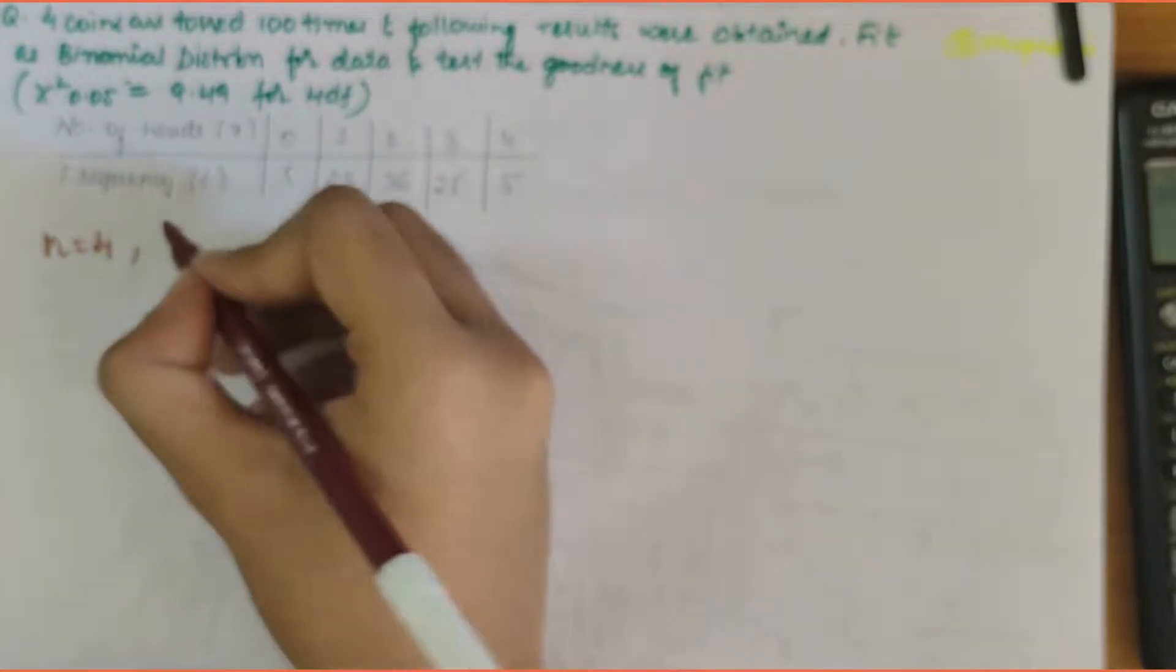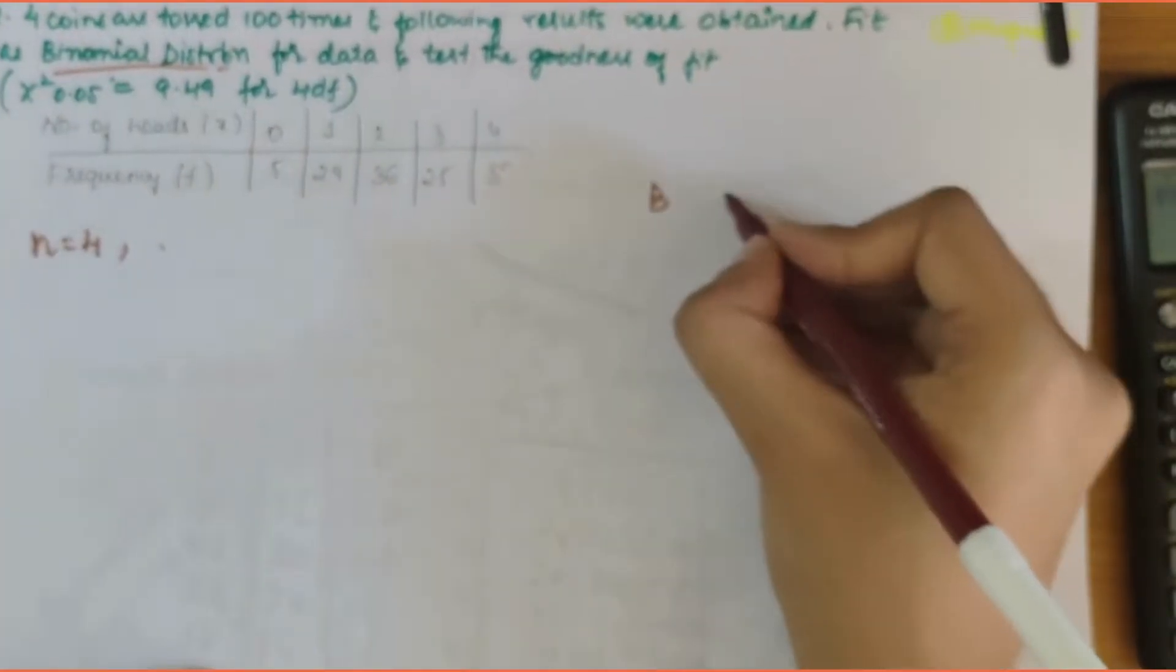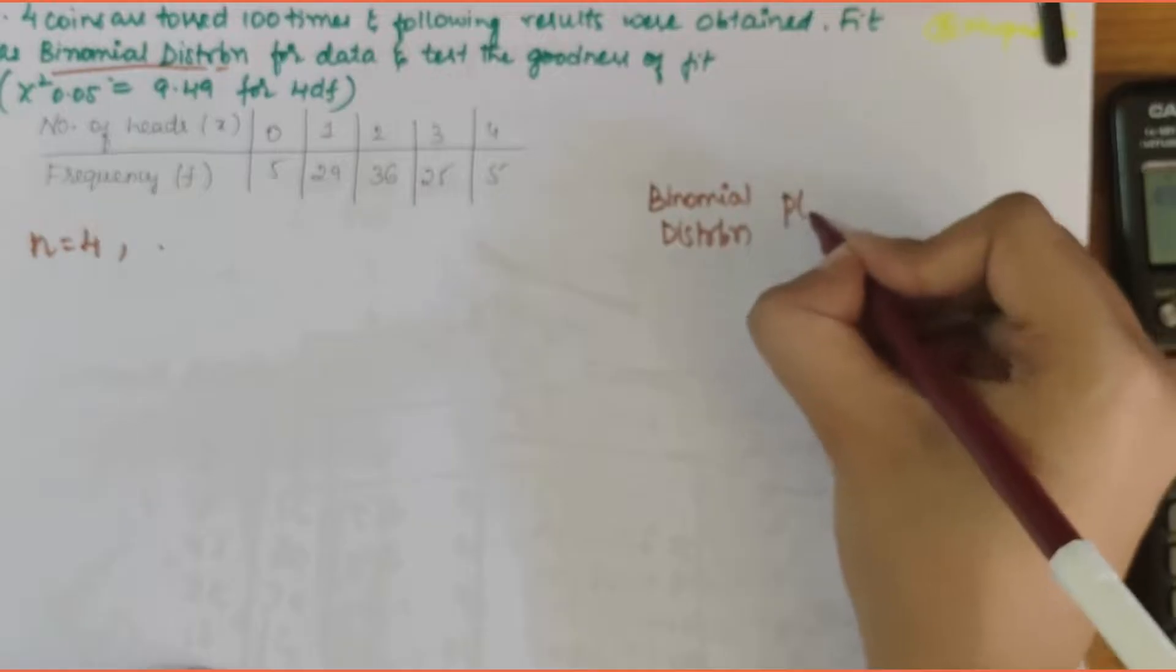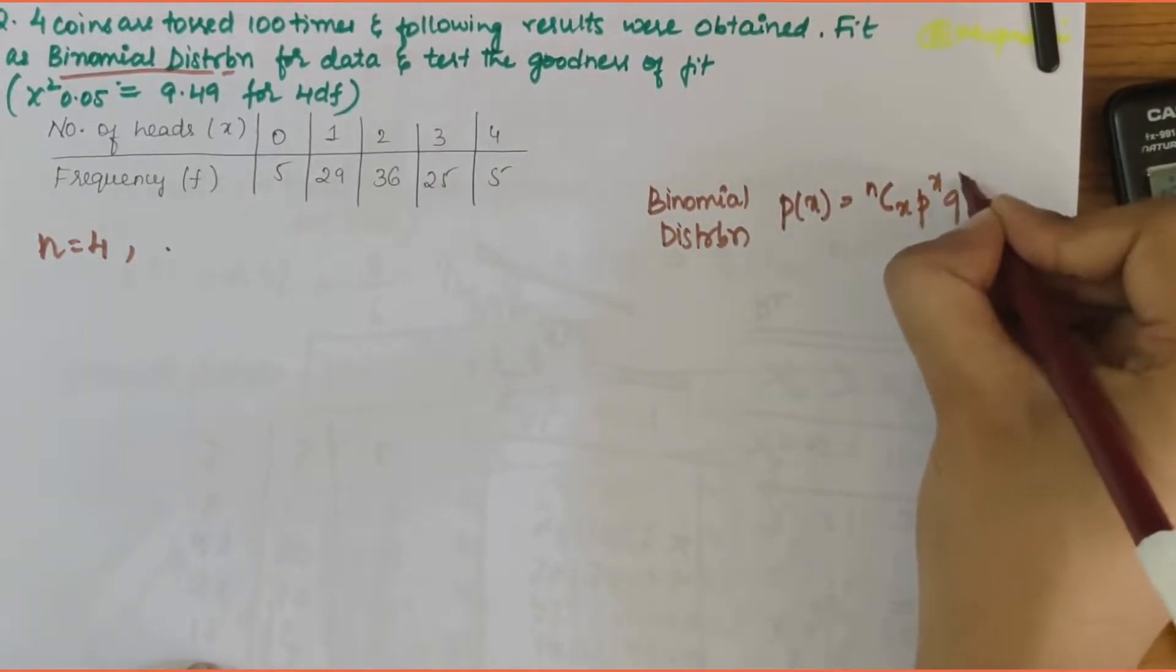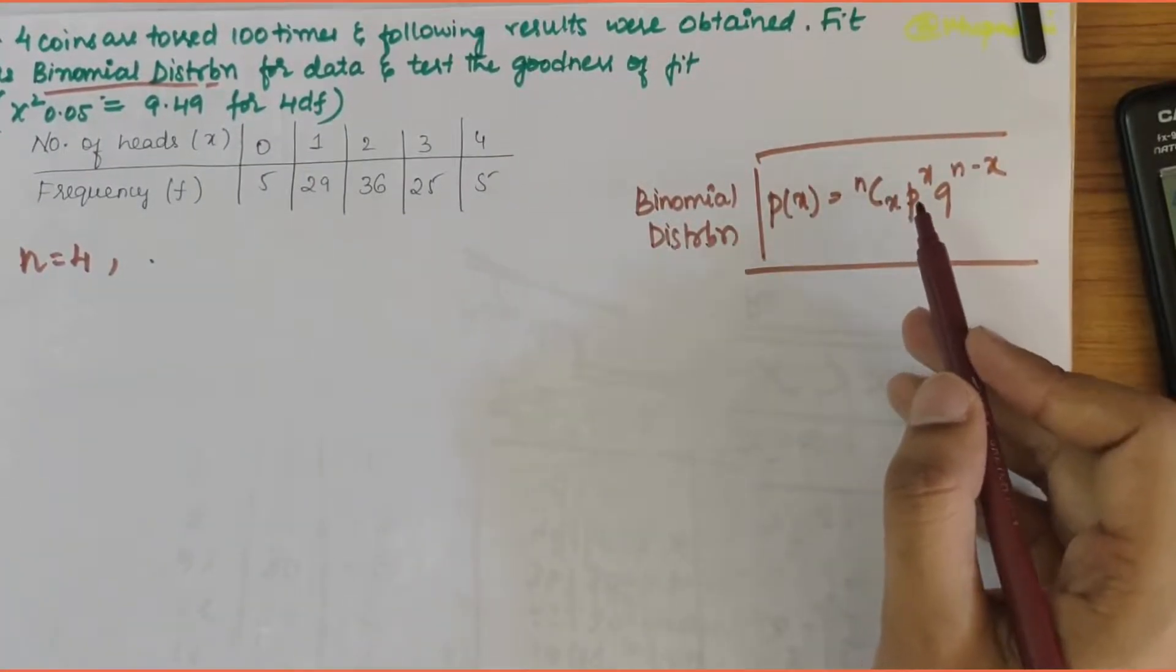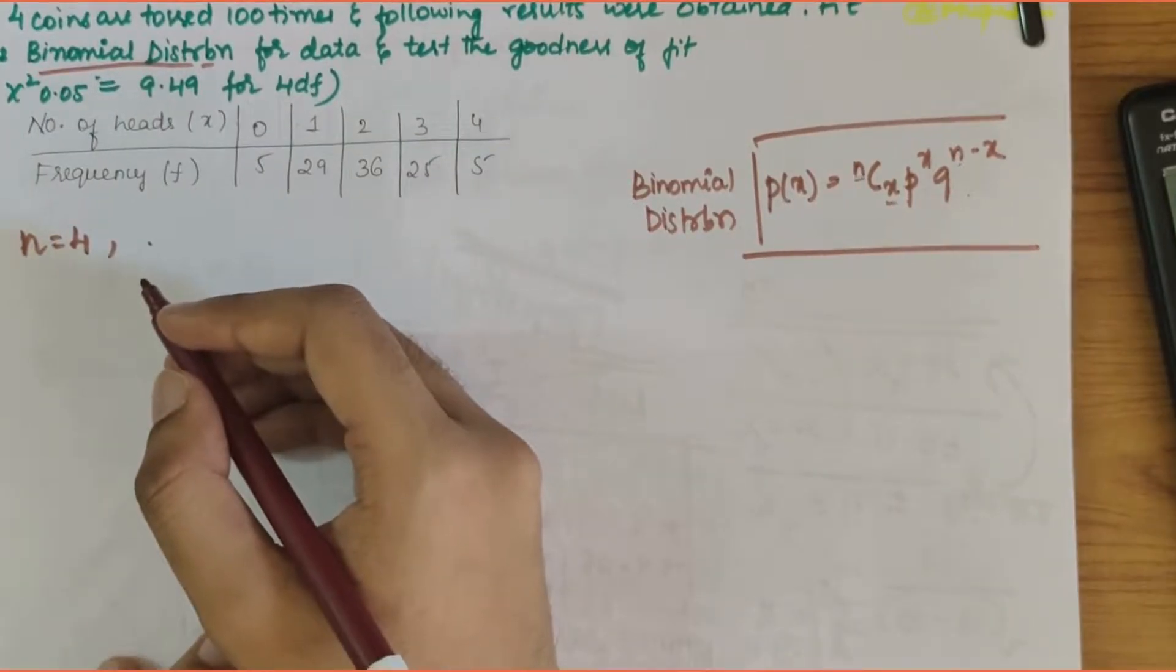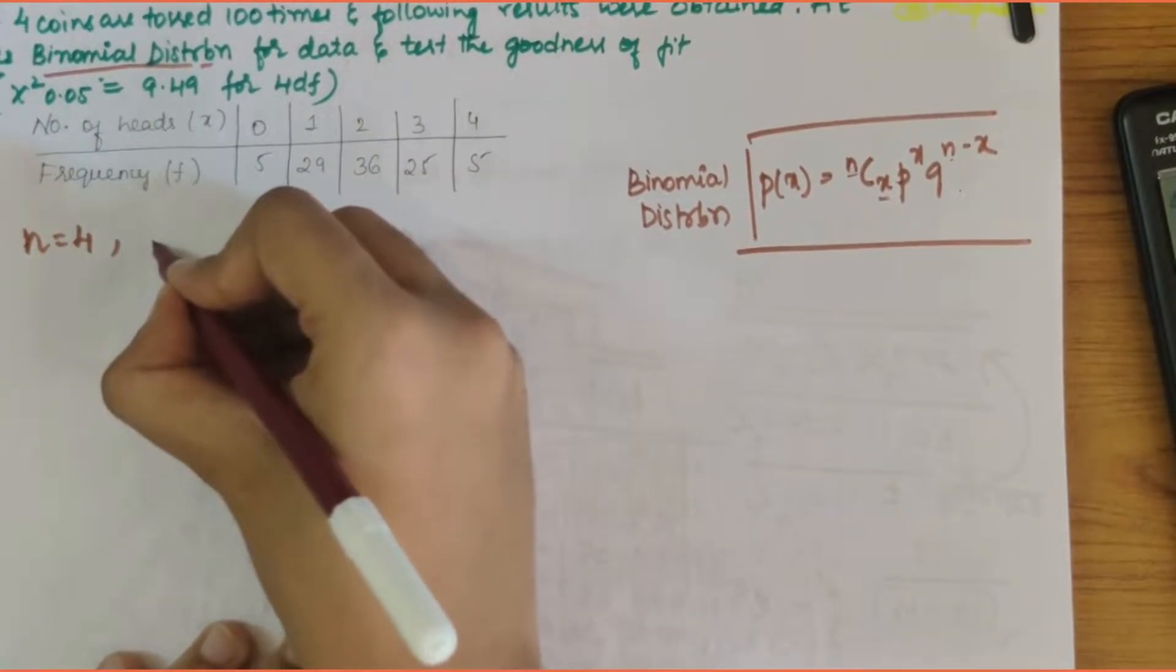First let's write the binomial distribution formula because here they have said binomial distribution. So binomial distribution, that is p of x, is equal to nCx times p to the power x times q to the power n minus x. In order to solve this question we require n value, x value which we have given here, then p and q values are required.